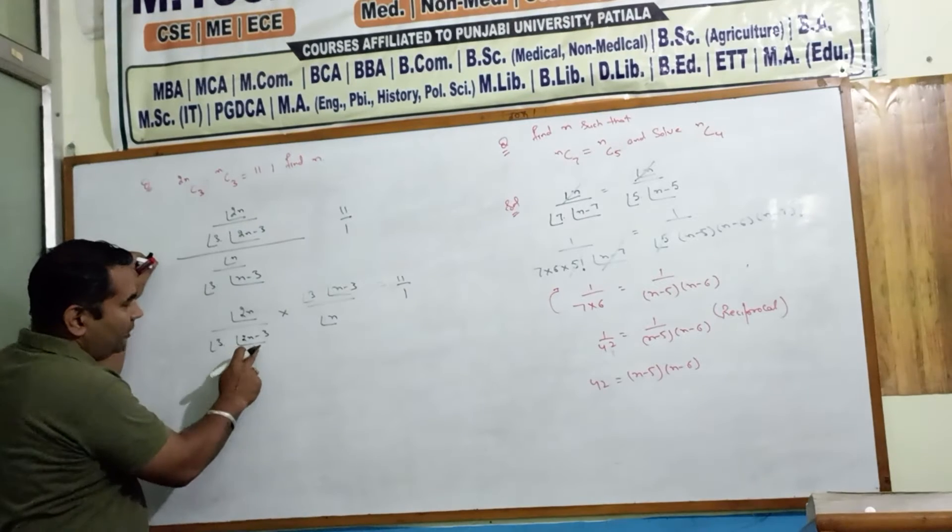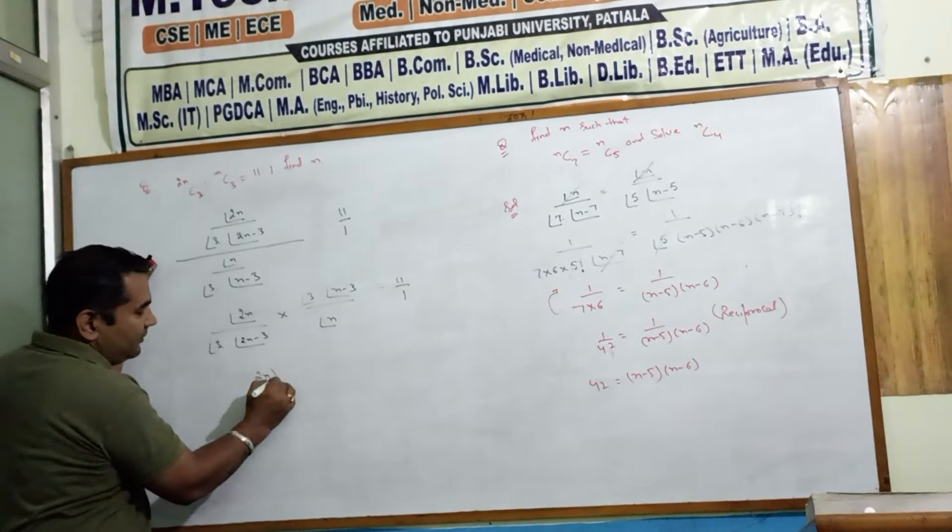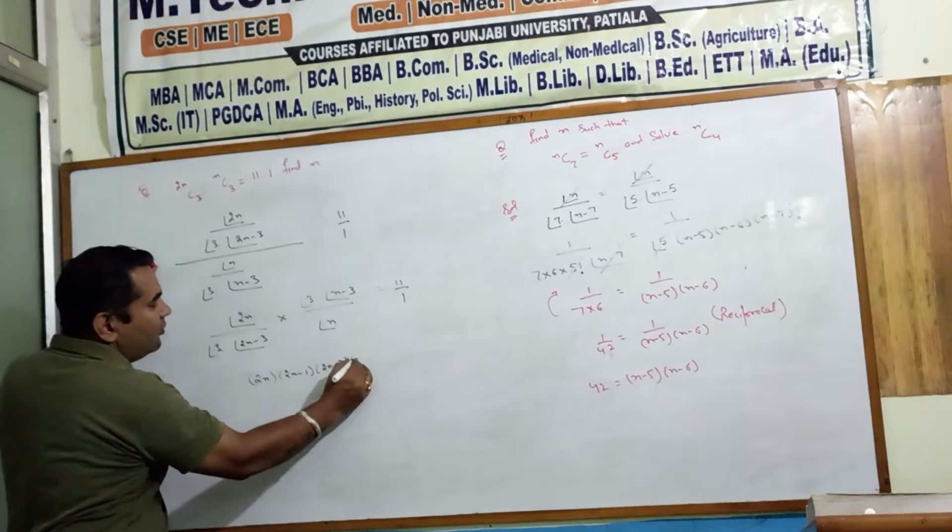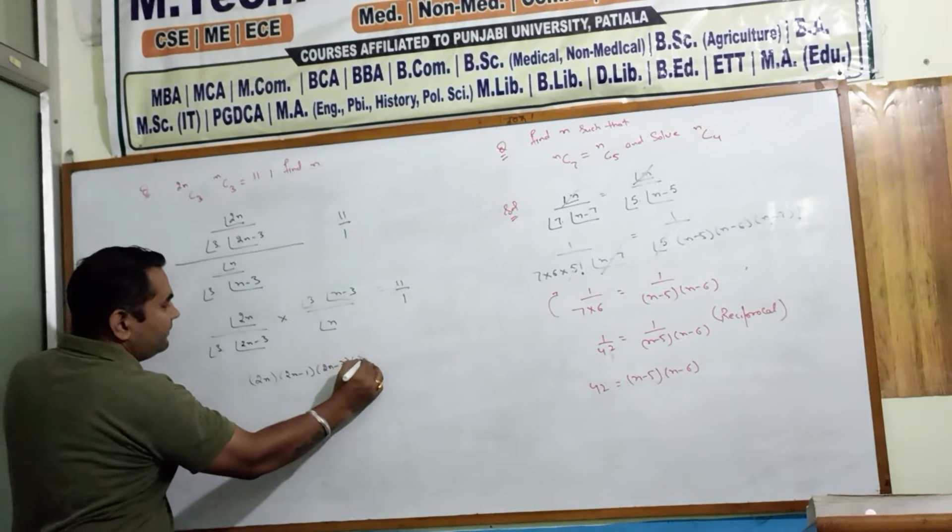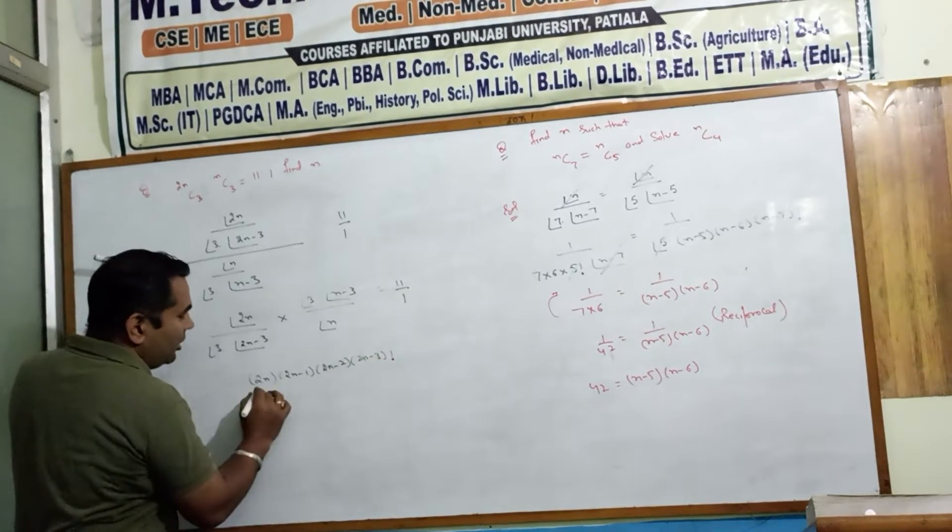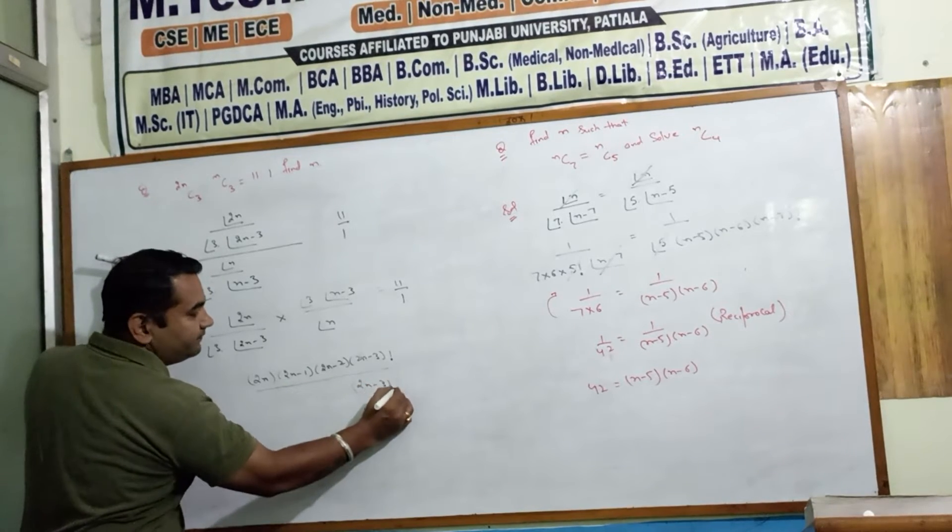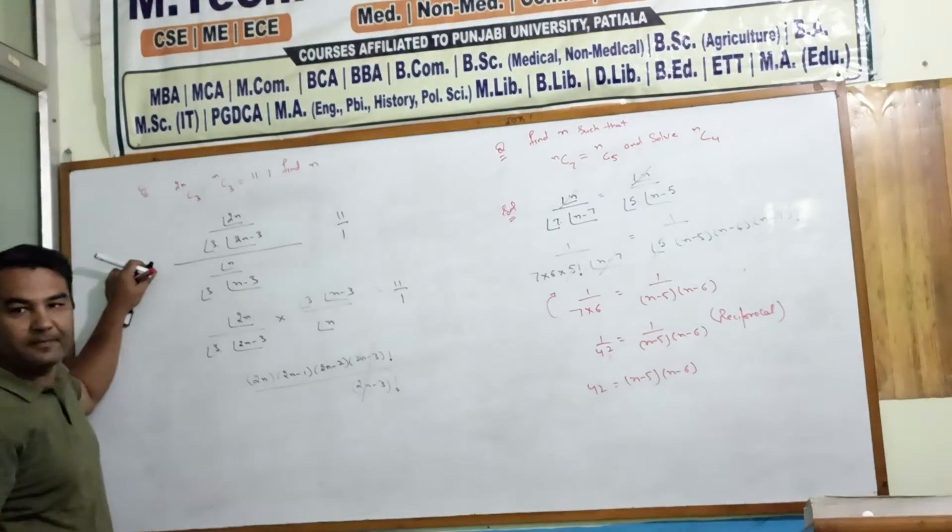2N times 2N minus 3 over 2N minus 1, 2N minus 2, 2N minus 3. This is the denominator. This now will cancel. Clear?